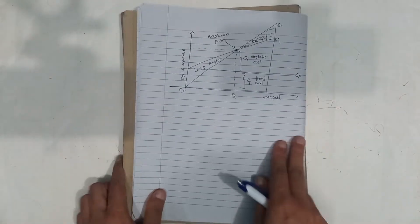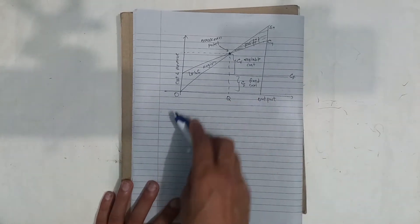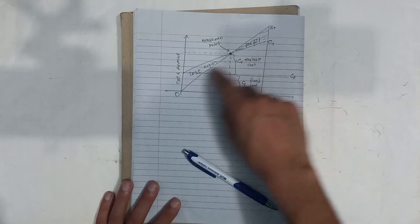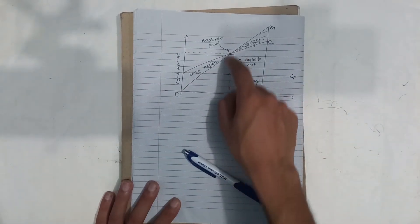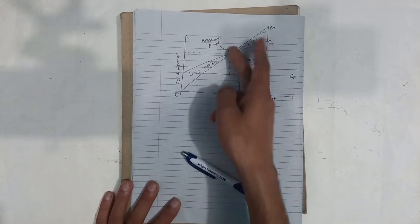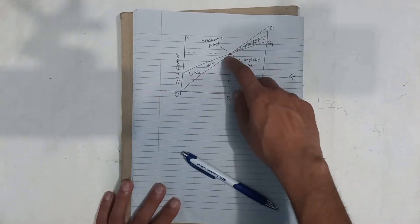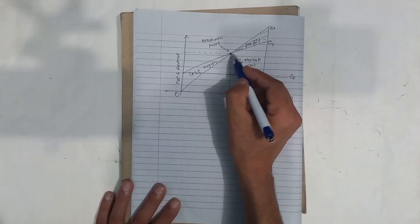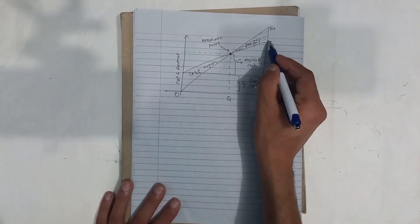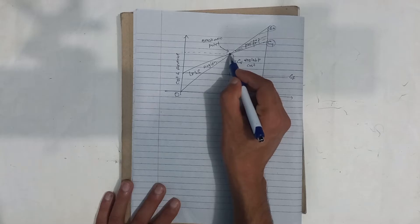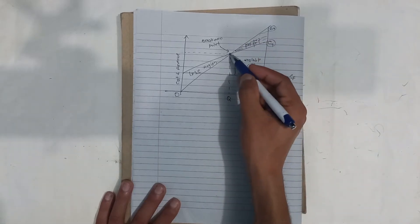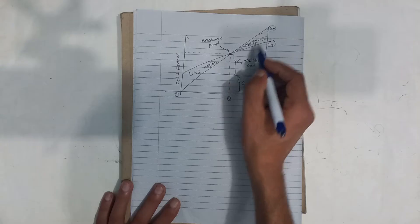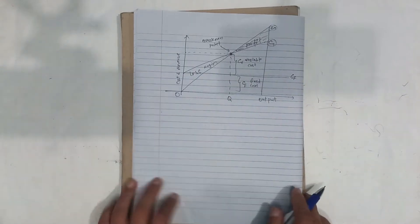Now we can see the diagram. On the x-axis is output quantity and on the y-axis is cost and revenue. The fixed cost is a horizontal line. Variable cost is added on top. The Q point where the sales revenue line and total cost line intersect is the break-even point. Below that point is a loss region; above it is a profit region.